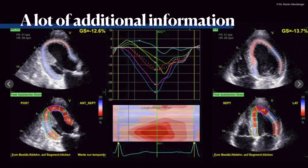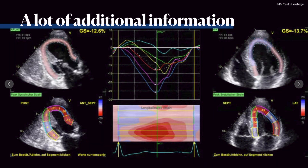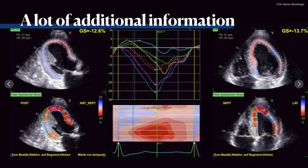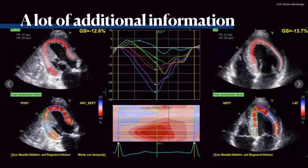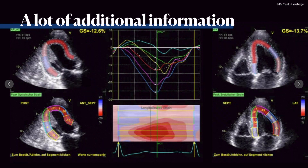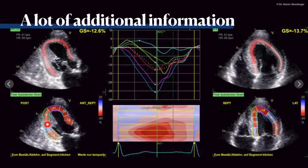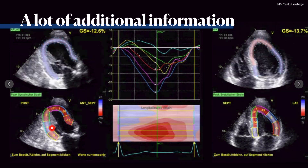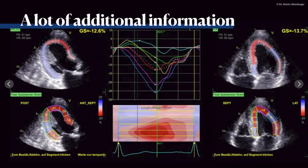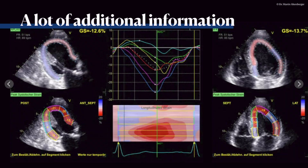One last thing I want to mention is strain imaging. Strain imaging holds a lot of additional information in cases of valvular pathology. Here you can see that there are some regional problems — the thickened myocardium leads to a reduced longitudinal strain.